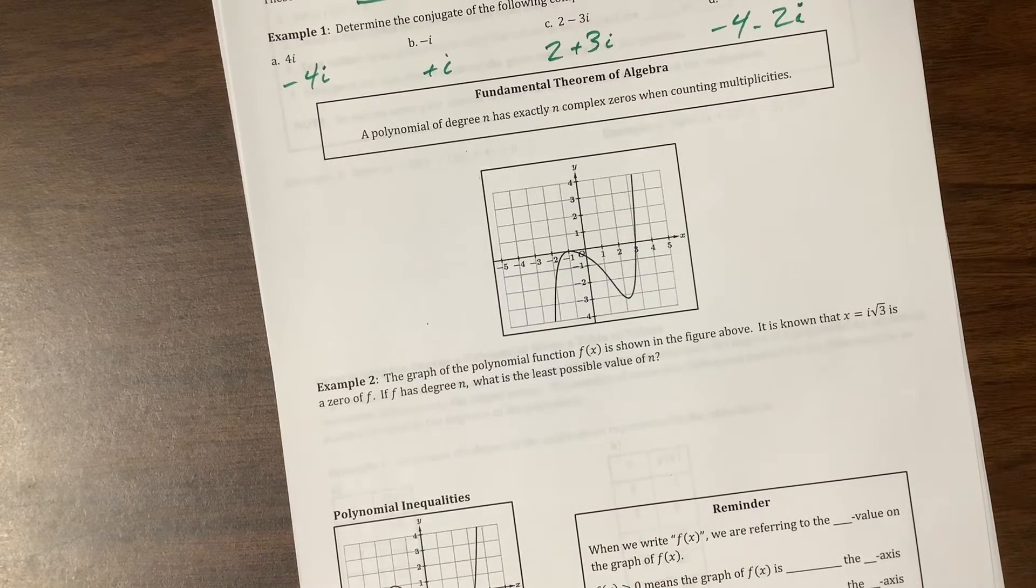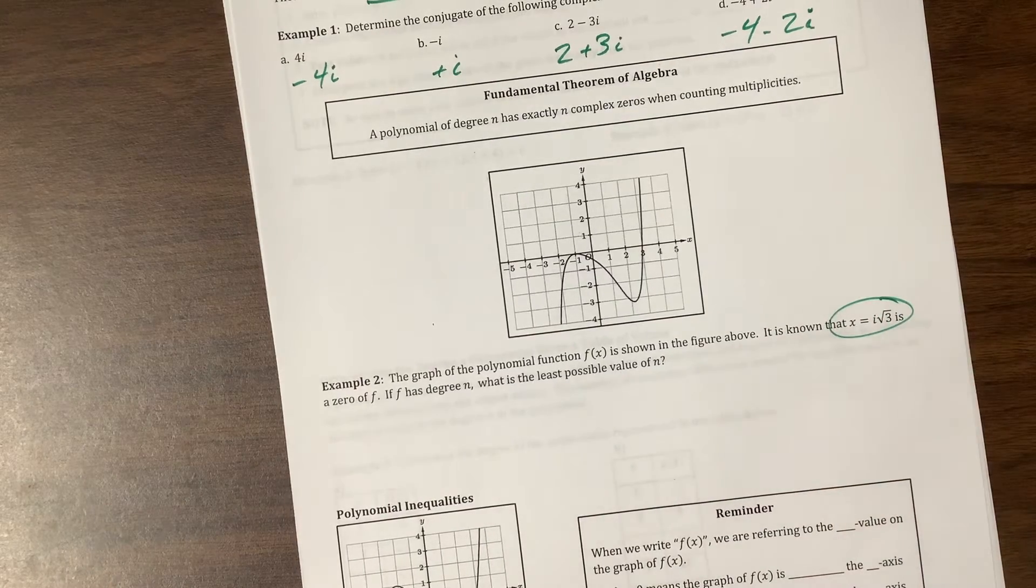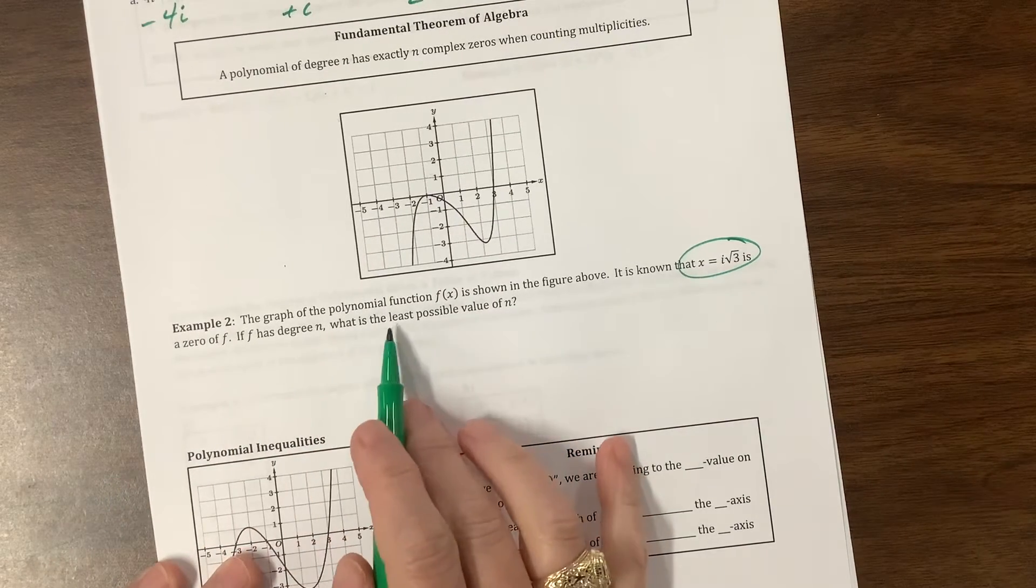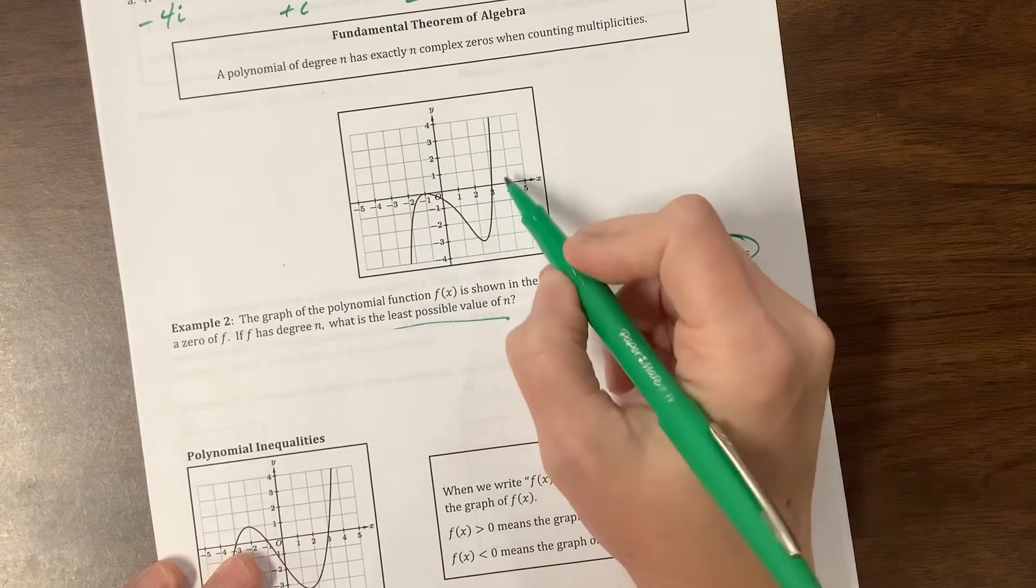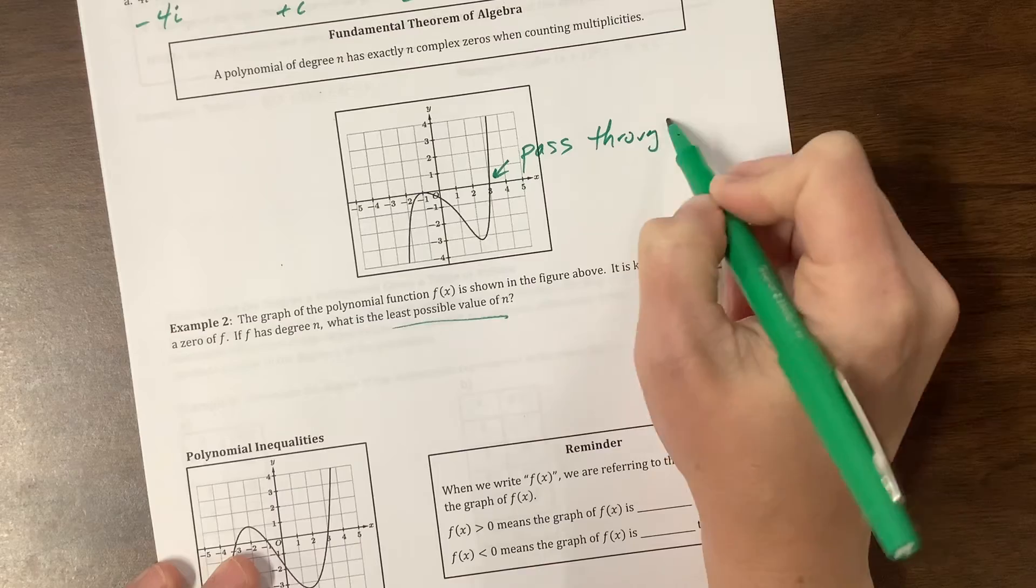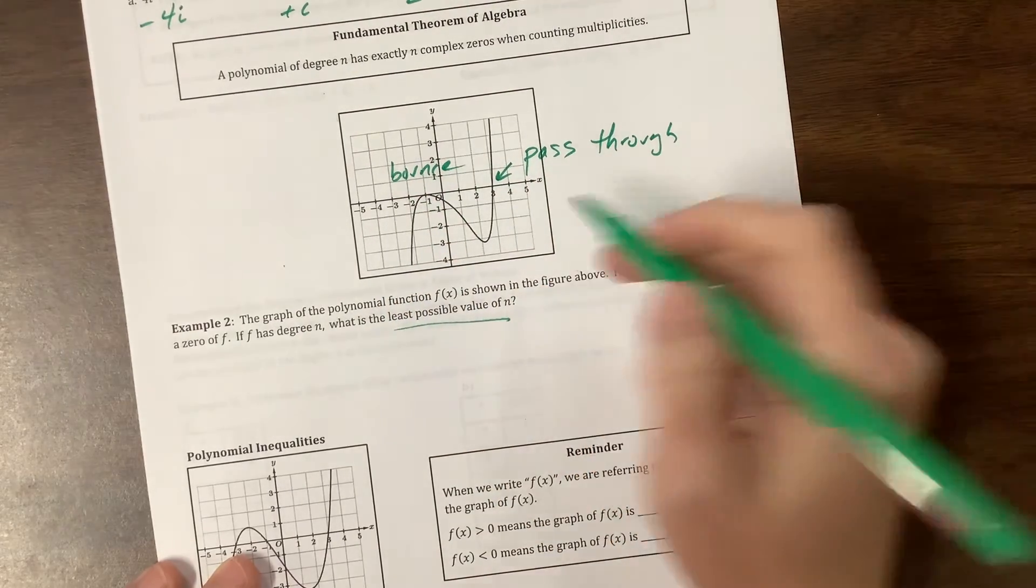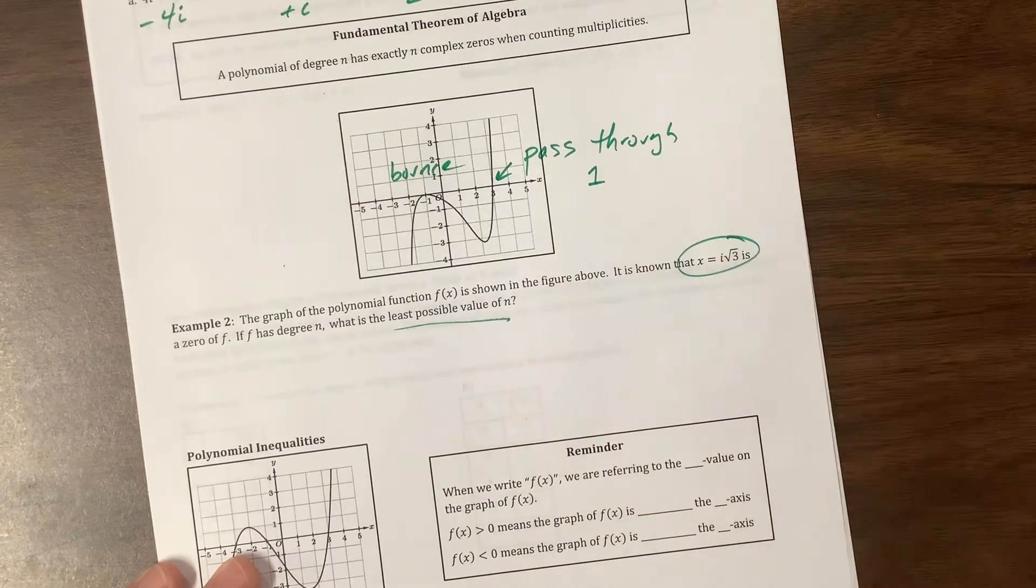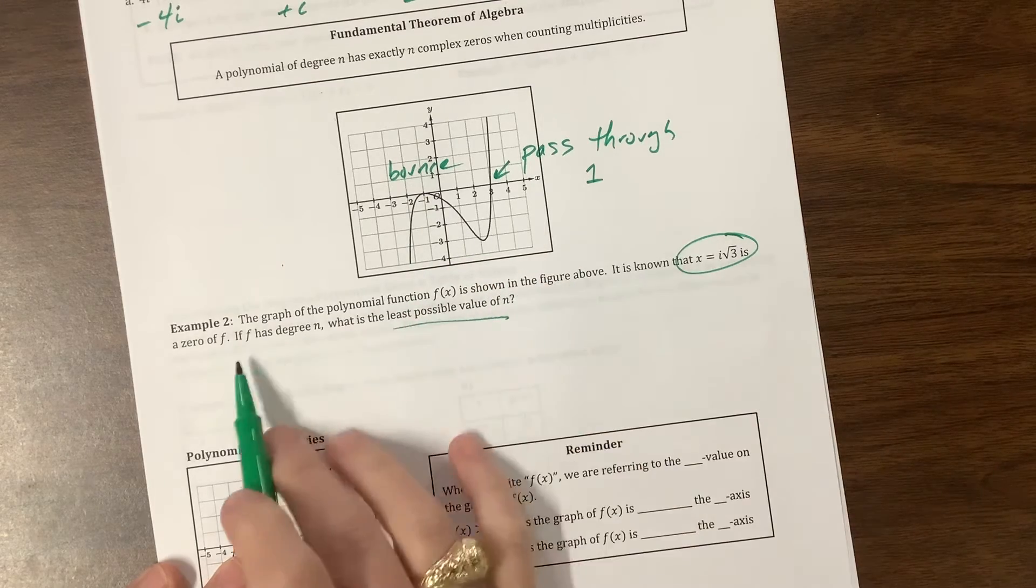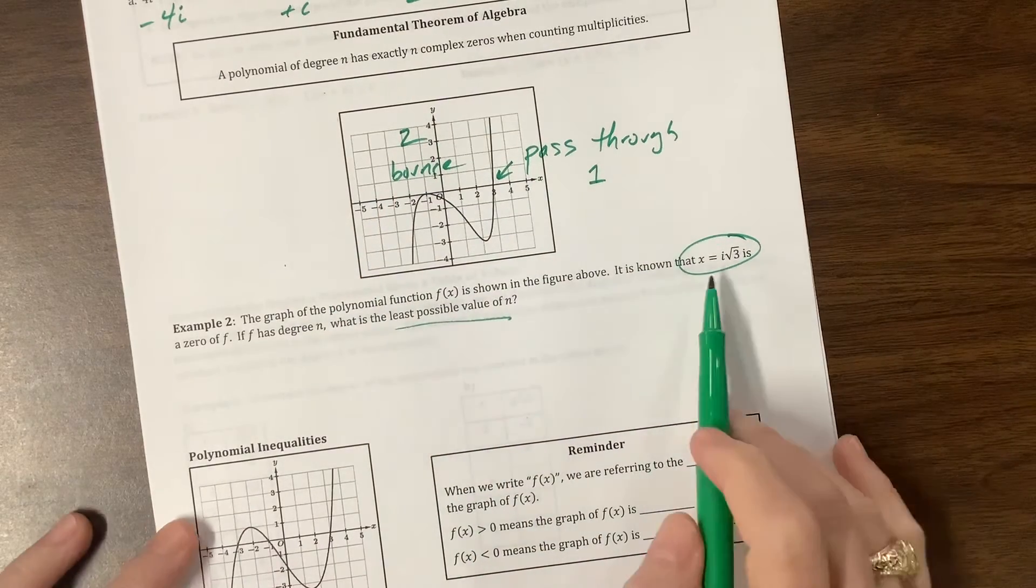Let's look at this next one. The graph of the polynomial function f is shown in the figure above. It is known that x equals i root 3 is a zero. If it has degree n, what is the least possible value of n? So here's what I see. I see a pass-through, and I see a bounce. The pass-through tells me that I'm going to have 1 zero from that. A bounce tells me it's going to be even. The smallest, so notice they said the least possible value, so that means that this is going to give us a multiplicity of 2.